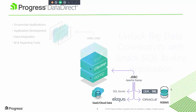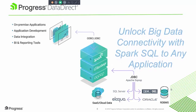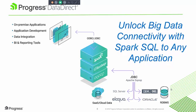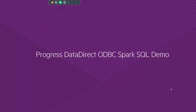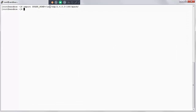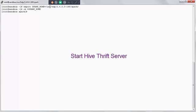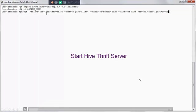We're going to take a look at unlocking that data through Spark SQL to any BI or reporting application. In the second demo, we are going to utilize the DataDirect ODBC Spark SQL driver, and we're going to be using a BI tool called QlikView. I'm starting off in my Hadoop sandbox. I've exported a spark_home environment variable, and I'm changing into that Spark home and starting the Hive Thrift Server.